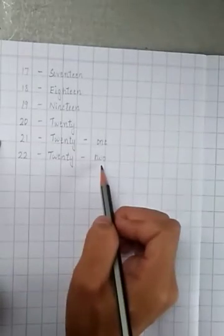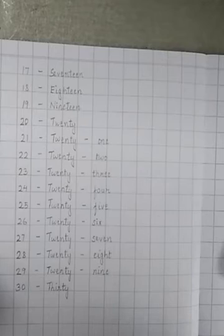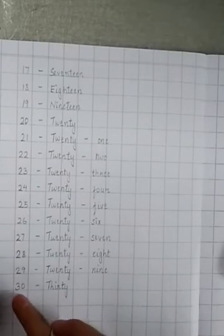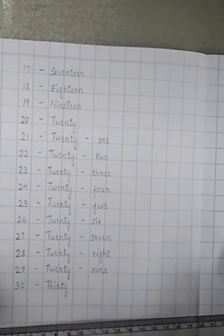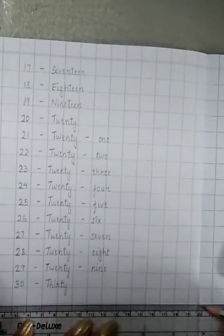You will write till 30 and after you finish, you will leave one line and draw a long line.